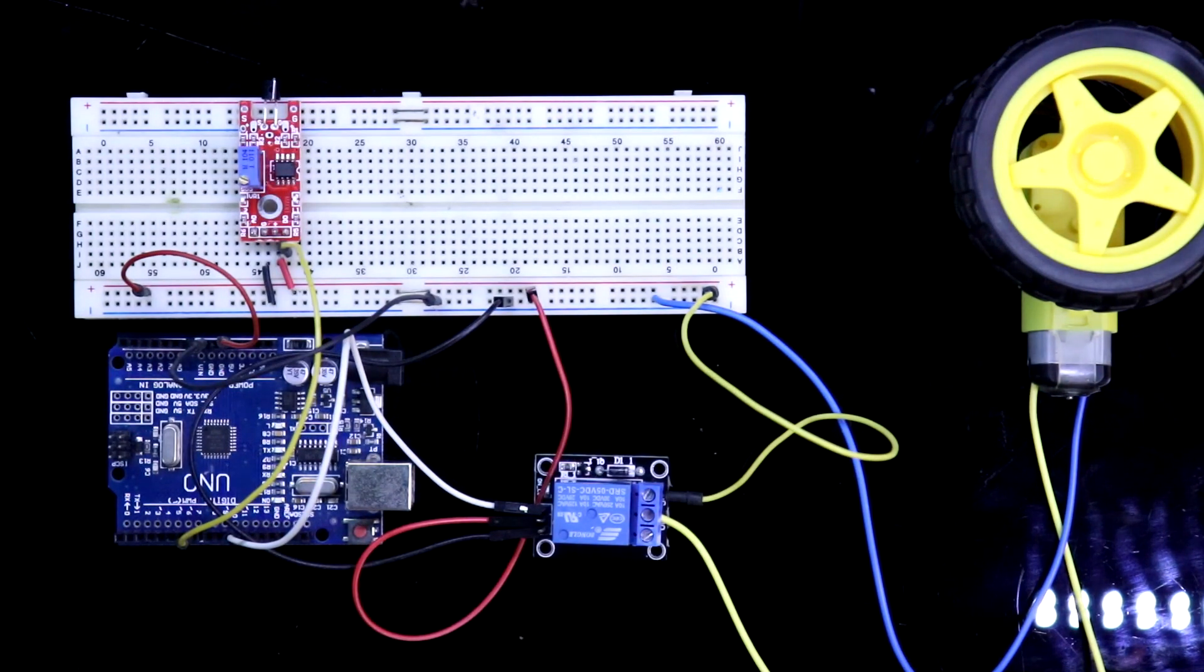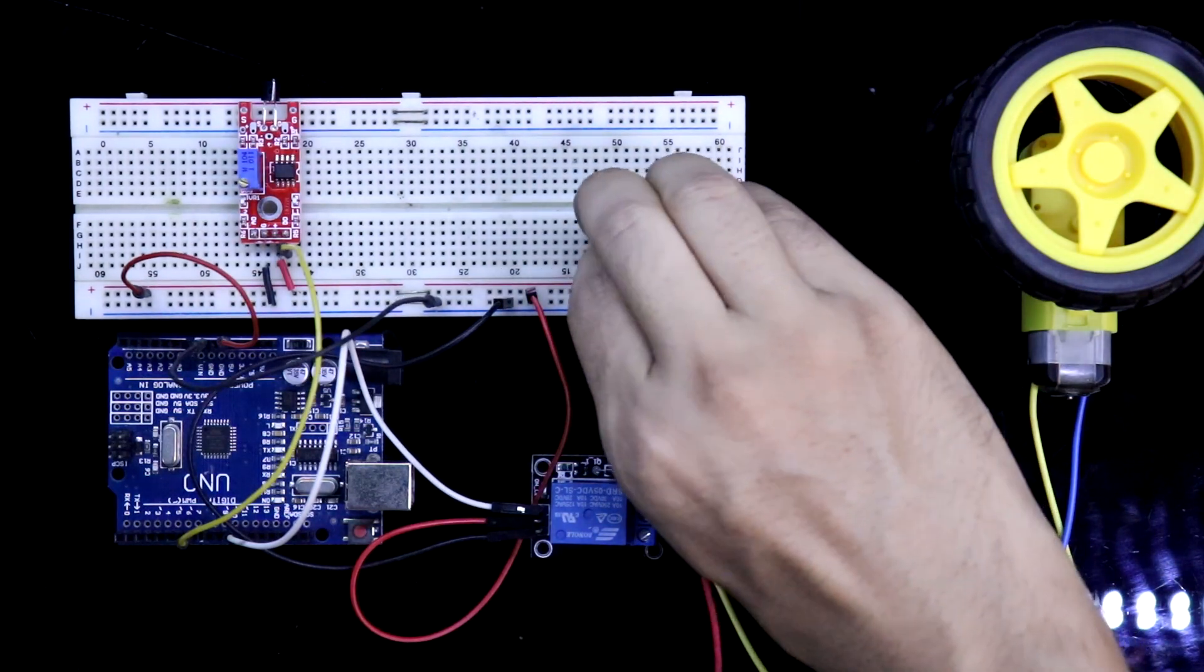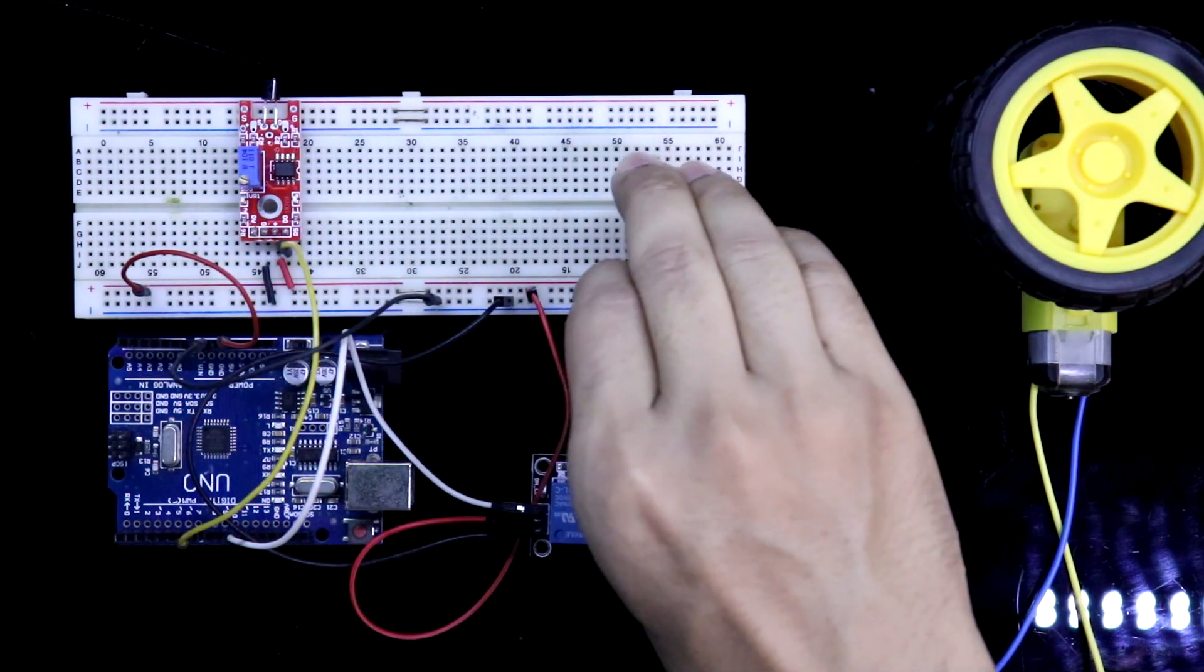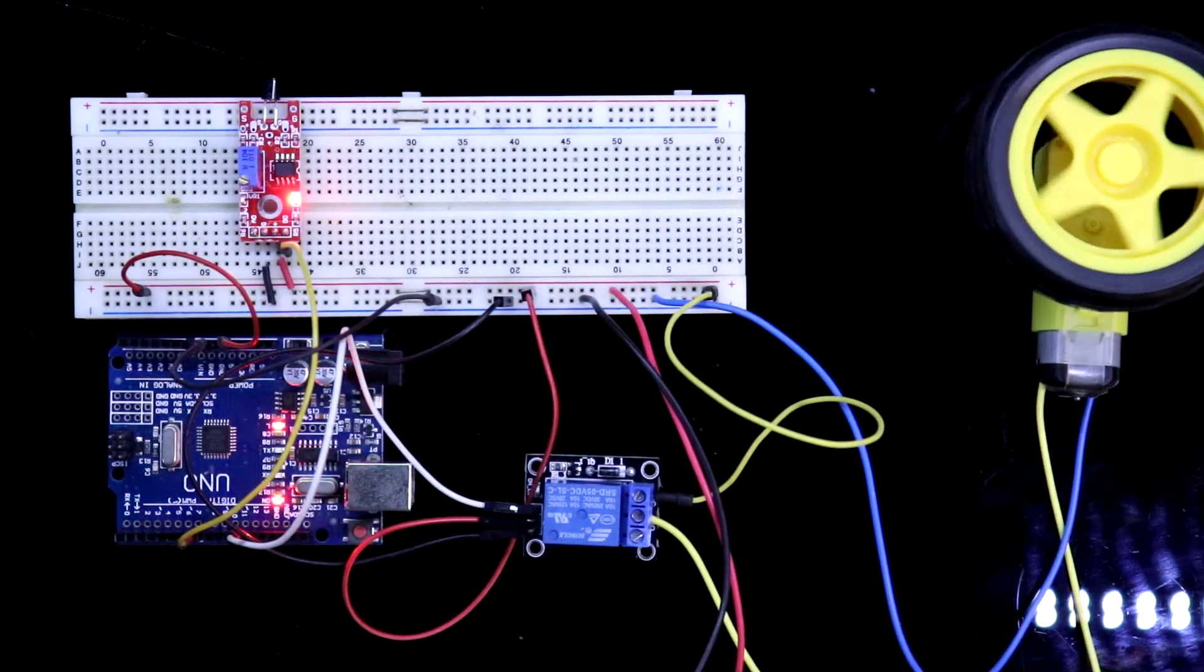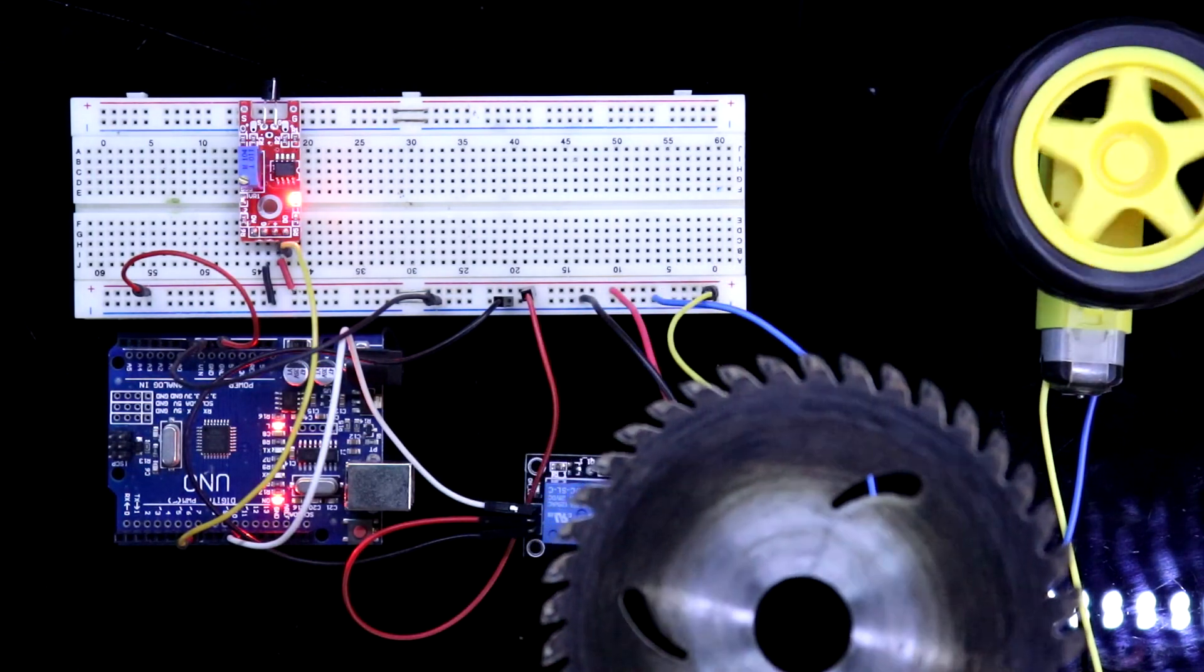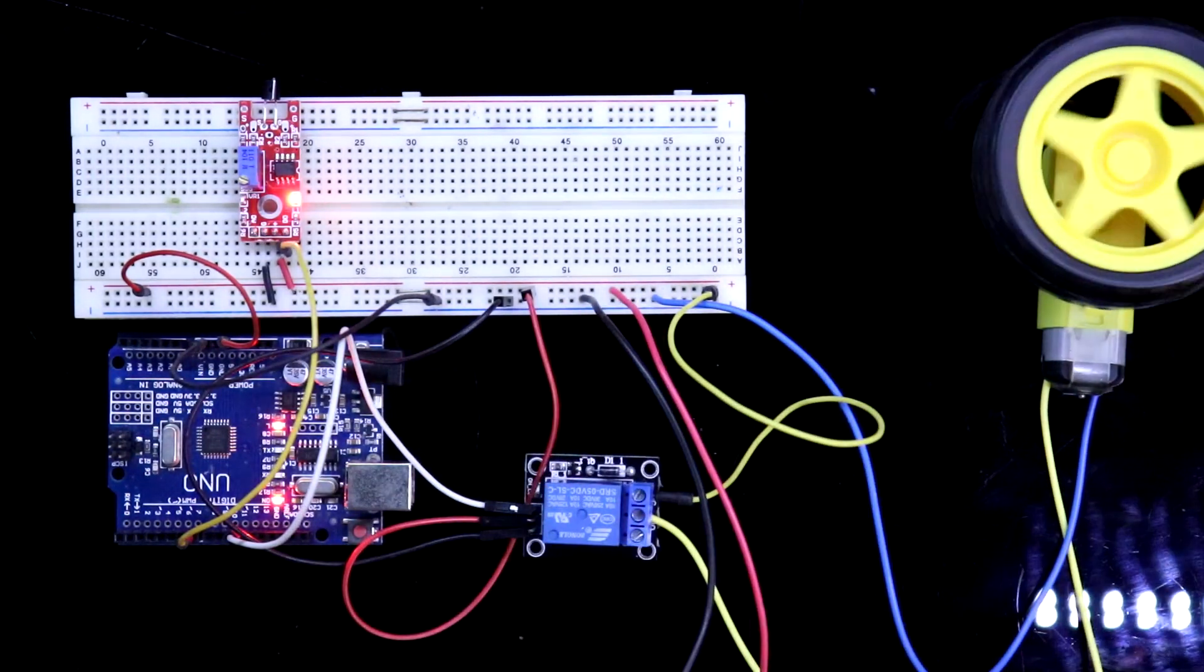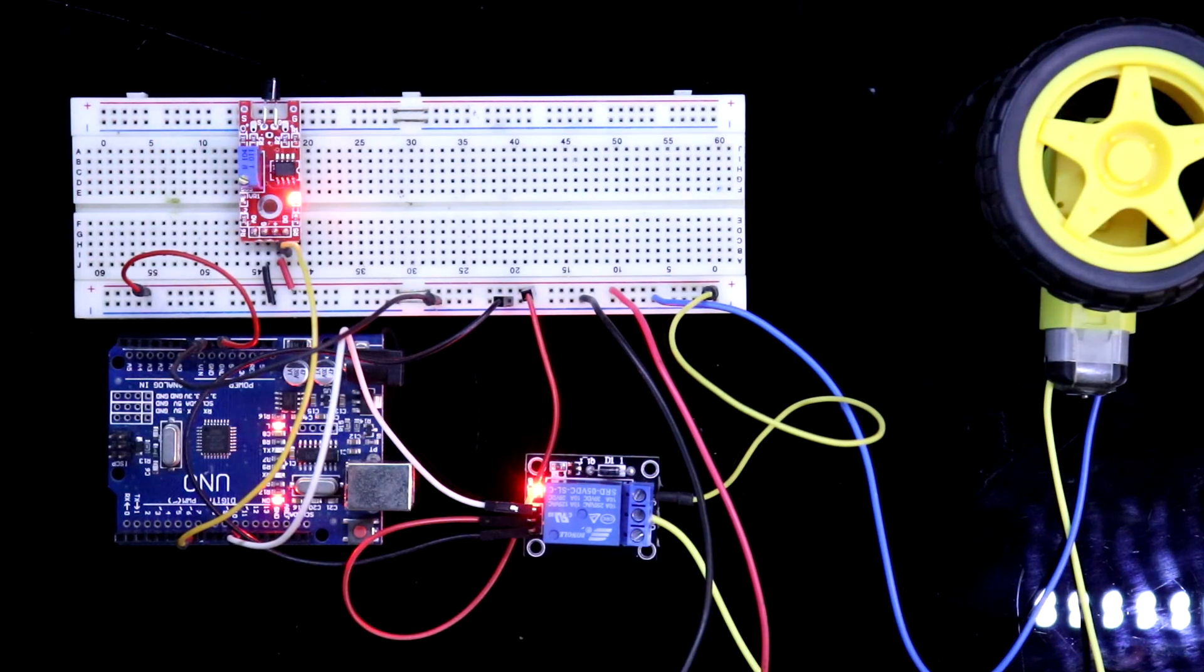Now connecting the power supply. Here it is positive and the negative. The machine is running, this is running and you have touched it accidentally. Here you have touched, the machine is stopped.